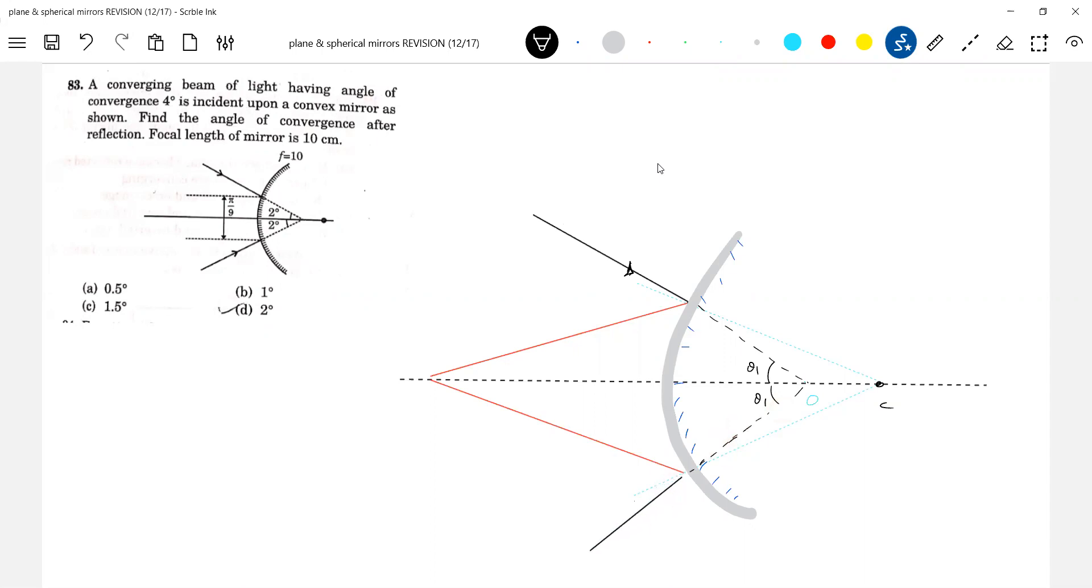Rough diagram. This is ray two, this is ray one. Find the angle of convergence. What do you mean by angle of convergence? Yes, given the distance pi by 18. I'll write you, that's one more.